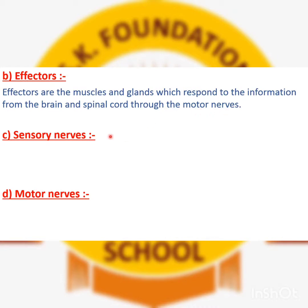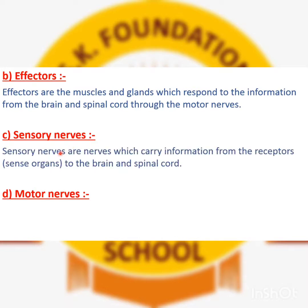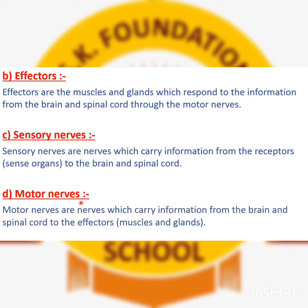To repeat clearly: sensory nerves are the nerves which carry information from the receptor to the brain. Motor nerves are the type of nerves which carry information from the brain to the effectors. So sensory nerves bring signals toward the brain, and motor nerves carry signals back from the brain and spinal cord to the effectors.